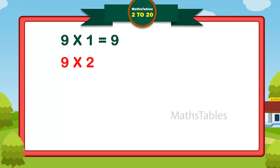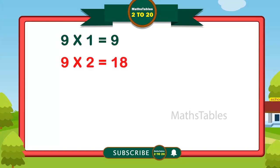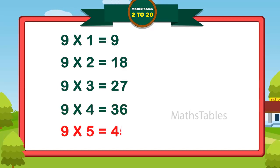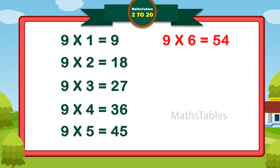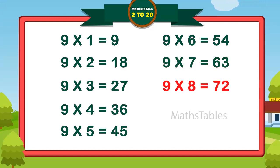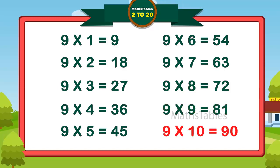9 ones are 9. 9 twos are 18. 9 threes are 27. 9 fours are 36. 9 fives are 45. 9 sixes are 54. 9 sevens are 63. 9 eights are 72. 9 nines are 81. 9 tens are 90.